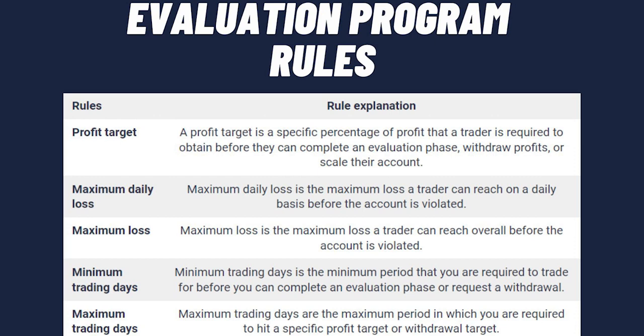The minimum trading days rule is the minimum period you must trade before completing an evaluation phase or requesting a withdrawal. Both Phase 1 and Phase 2 have a five-day minimum trading requirement. On a funded account, you must trade a minimum of 10 trading days before being eligible for a payout. The maximum trading days rule is the maximum period in which you must hit a profit or withdrawal target — Phase 1 allows 30 calendar days and Phase 2 allows 60 calendar days.